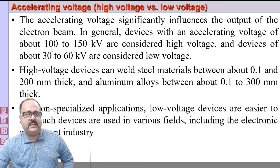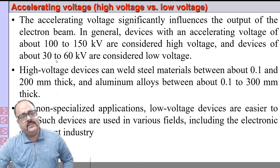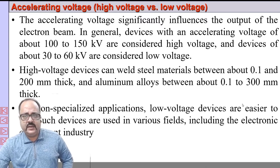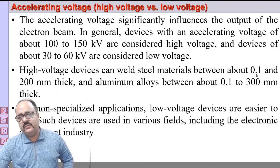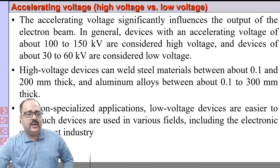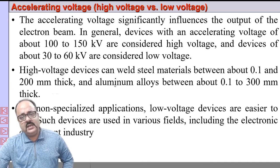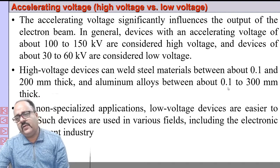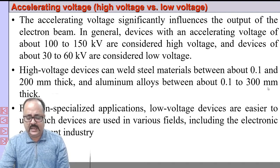High voltage settings are around 100 to 150 kV, and low/medium voltage is around 30 to 60 kV. Steel materials can be welded from 0.1 to 200 mm thickness, and aluminum from 0.1 to around 300 mm — a very high range rarely achievable by other welding processes.